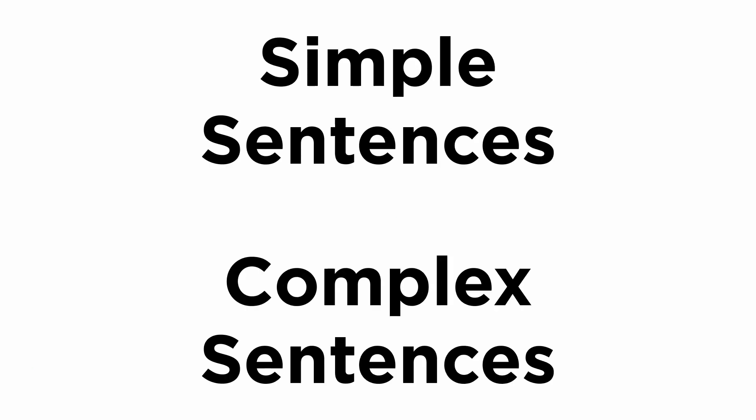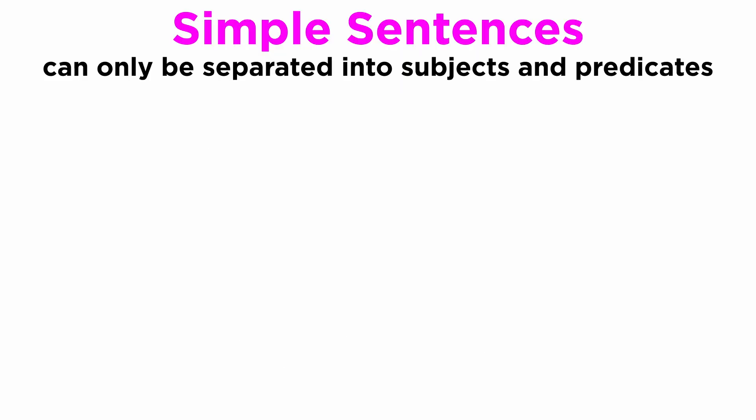With this understanding, we can then categorize sentences into simple or complex. Sentences are simple when, after our analysis of it, we can only separate it into logical subjects and predicates. Therefore, Dave is a YouTuber, Y(D), would be a simple sentence, because we have only the subject Dave, D, and the predicate () is a YouTuber, Y.